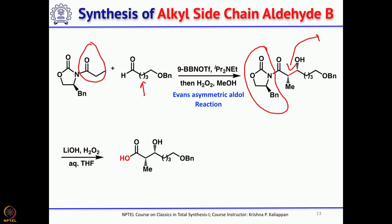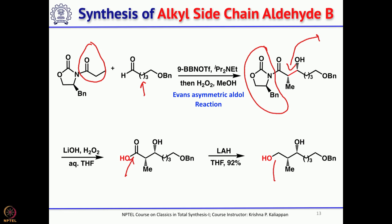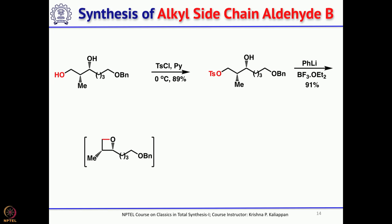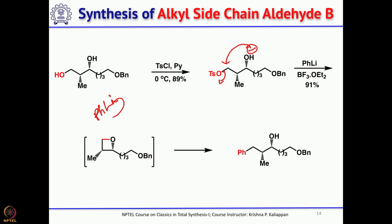Reduction of the carboxylic acid with LAH gave the 1,3-diol, comprising one primary and one secondary alcohol. Tosylation of the primary alcohol gives the primary tosylate. Treatment with phenyl lithium removes a proton, which then intramolecularly attacks to form an oxetane ring. A second equivalent of phenyl lithium attacks and opens the oxetane to introduce the phenyl group, effectively replacing the hydroxyl group with phenyl.